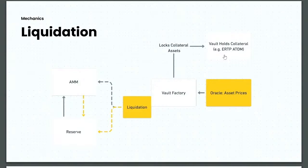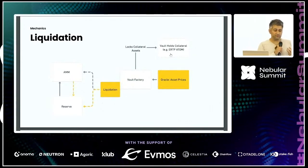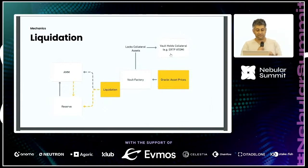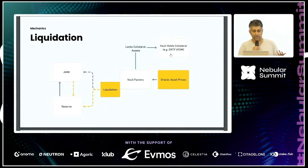What stability depends on is whether you can efficiently arbitrage the price discount that exists during liquidation — can you remove IST from the system faster than the value of collateral is falling? This is why ATOM is a really good asset for this: it's traded on many venues, and a well-capitalized market maker can buy discount ATOMs and sell them on multiple venues essentially instantaneously. If that mechanism fails, the protocol reserve can continue to buy and retire IST.